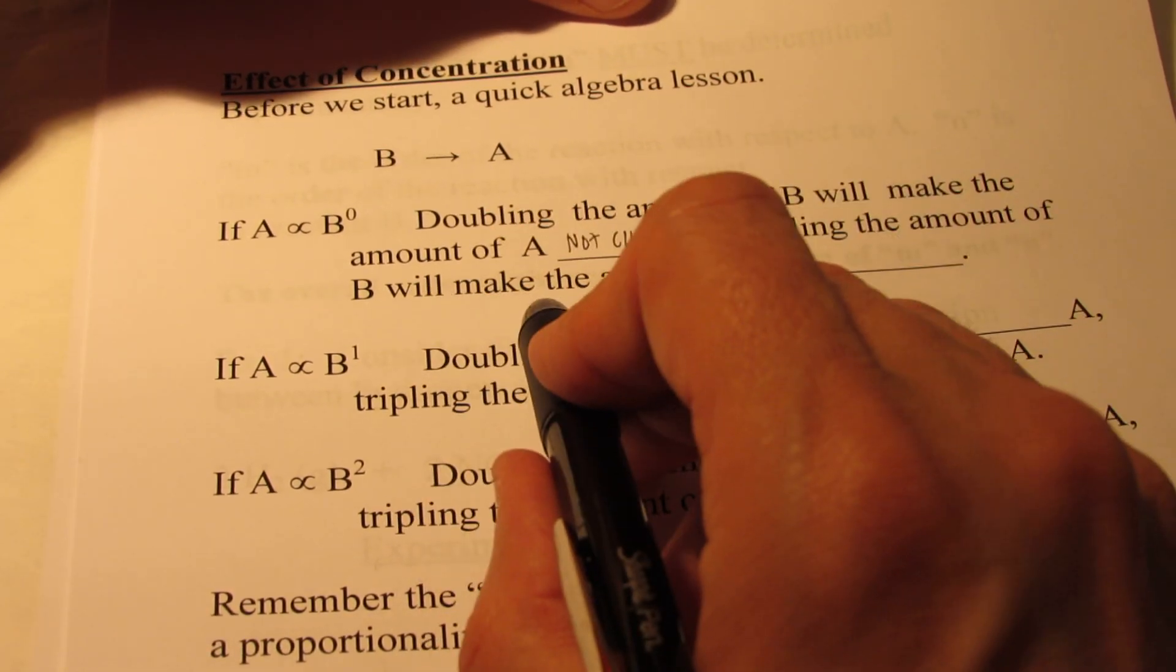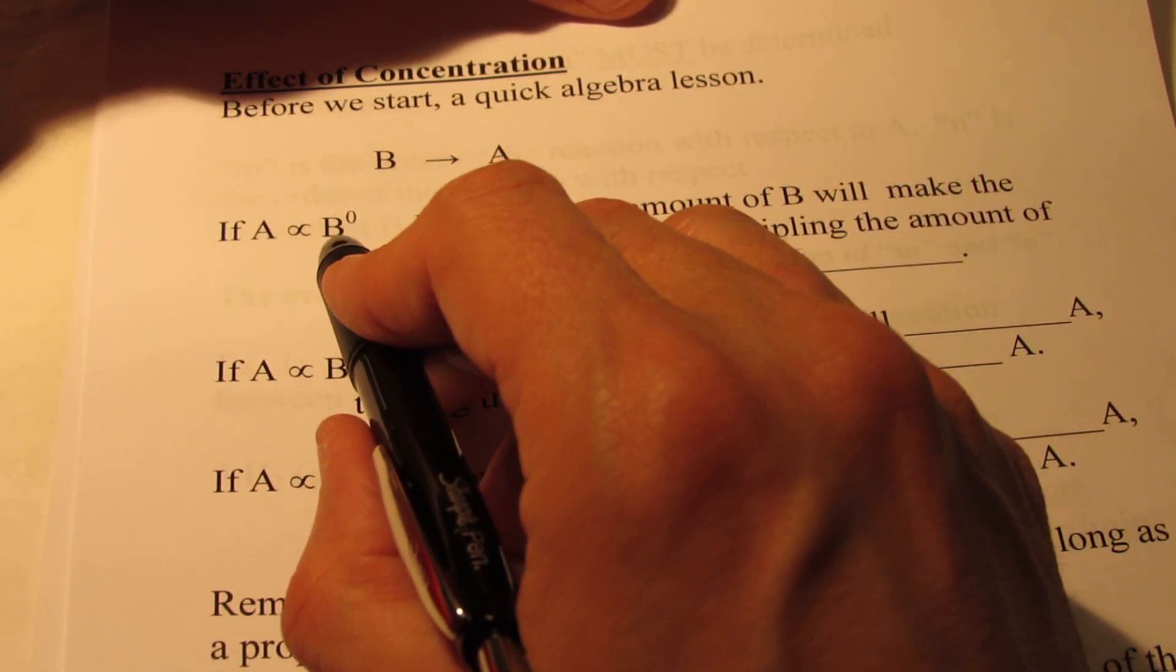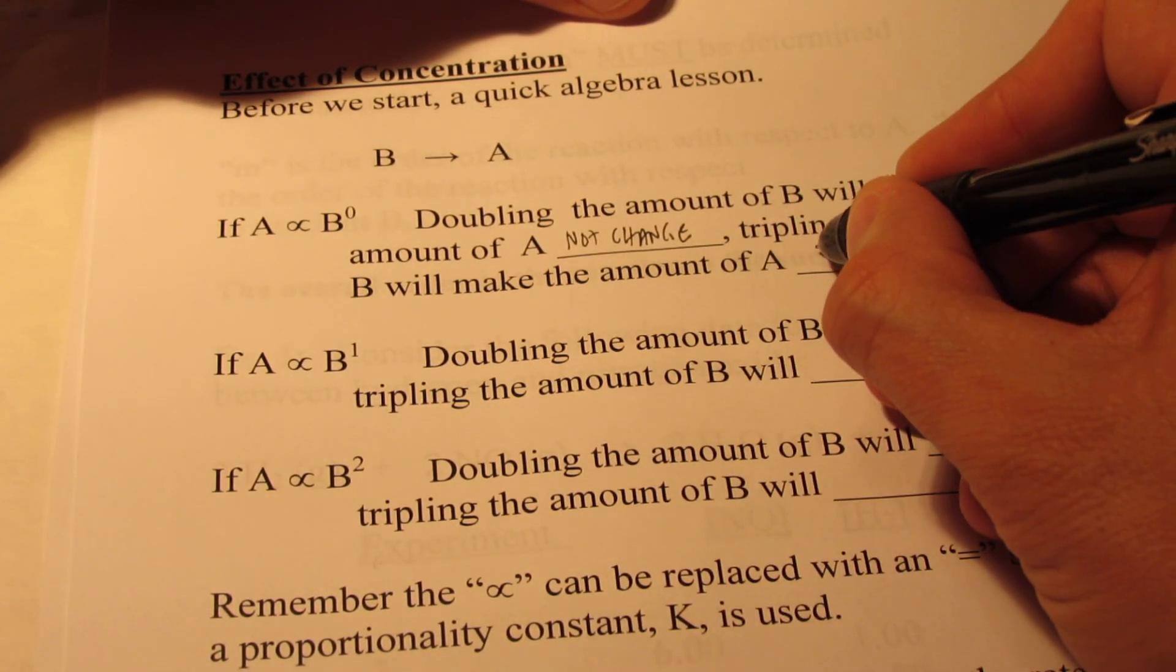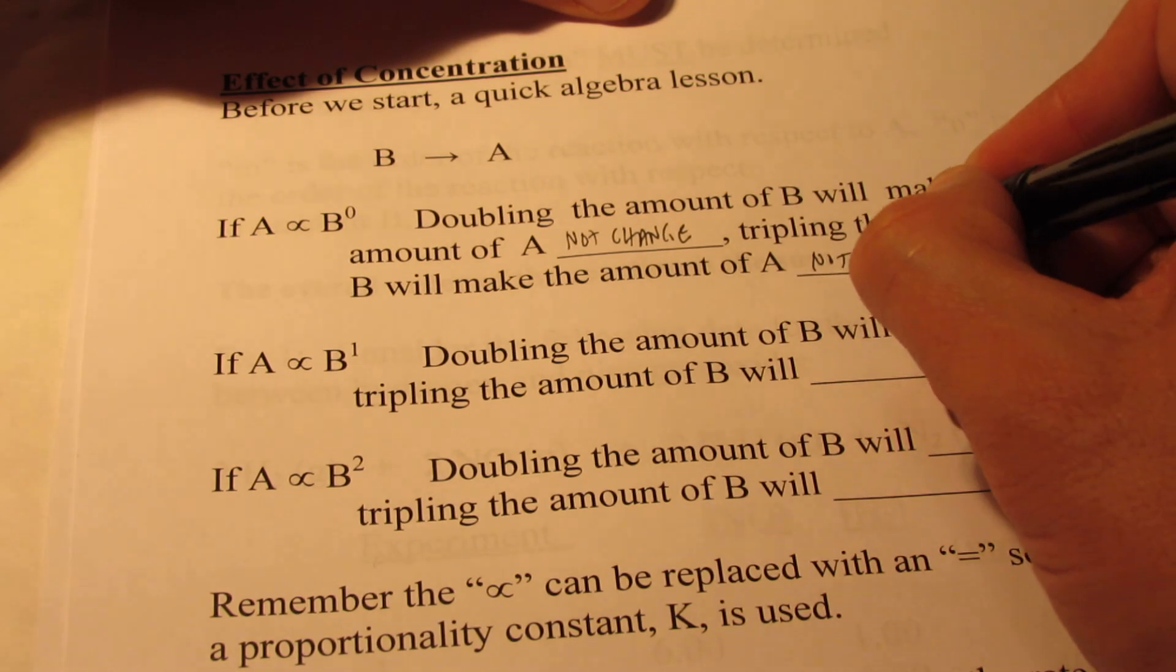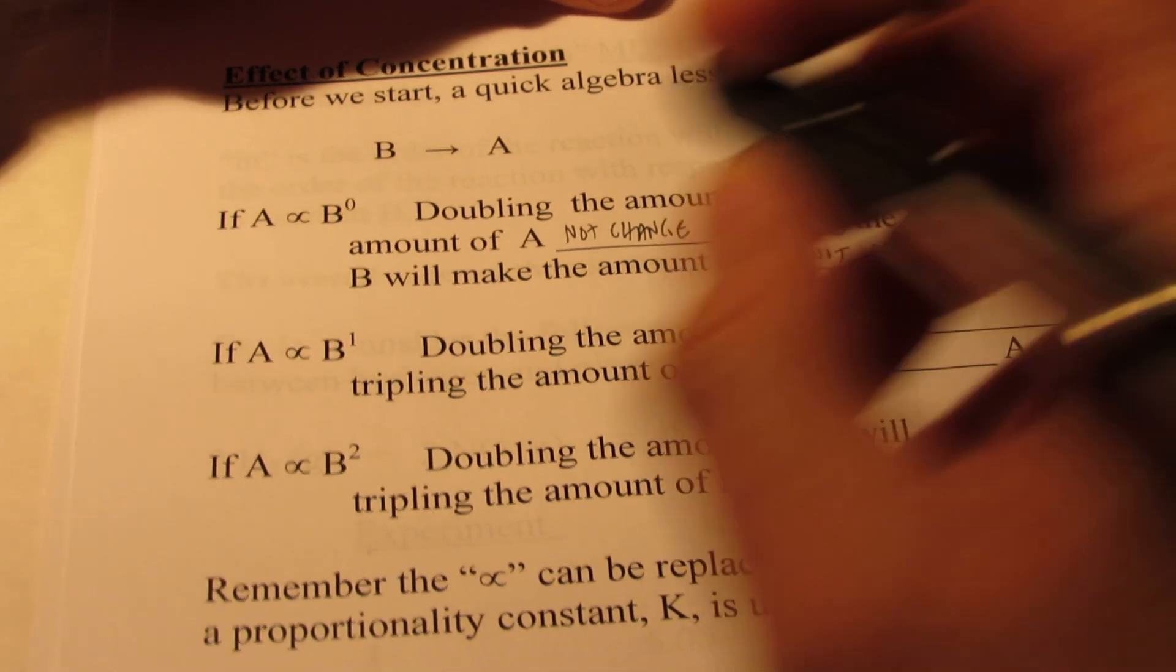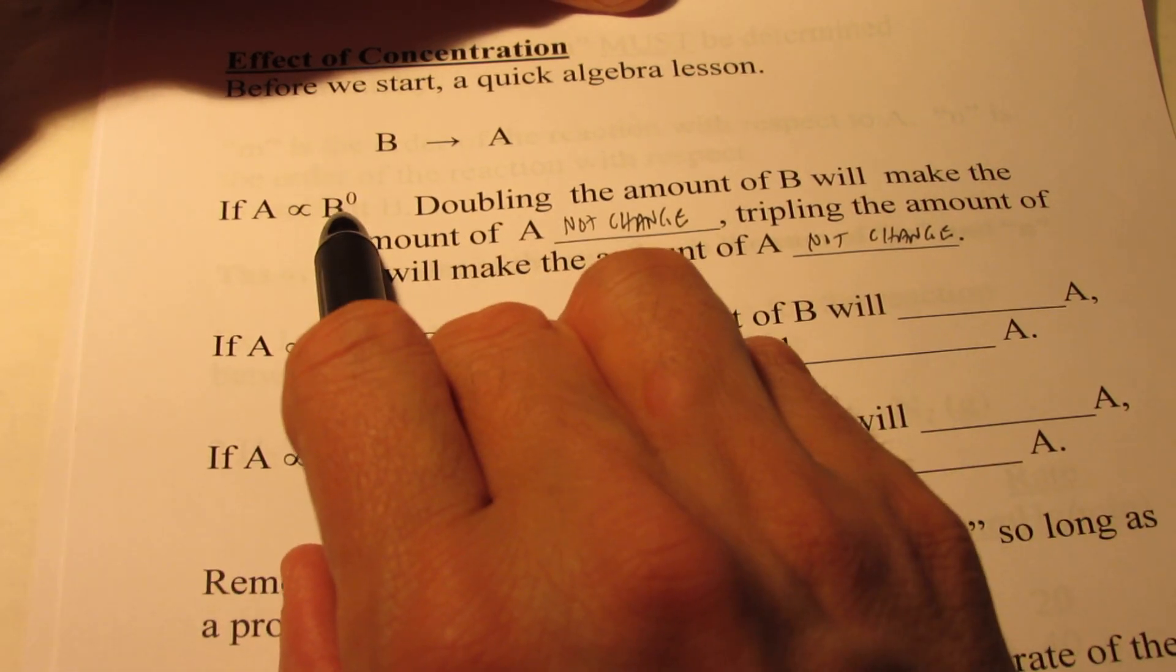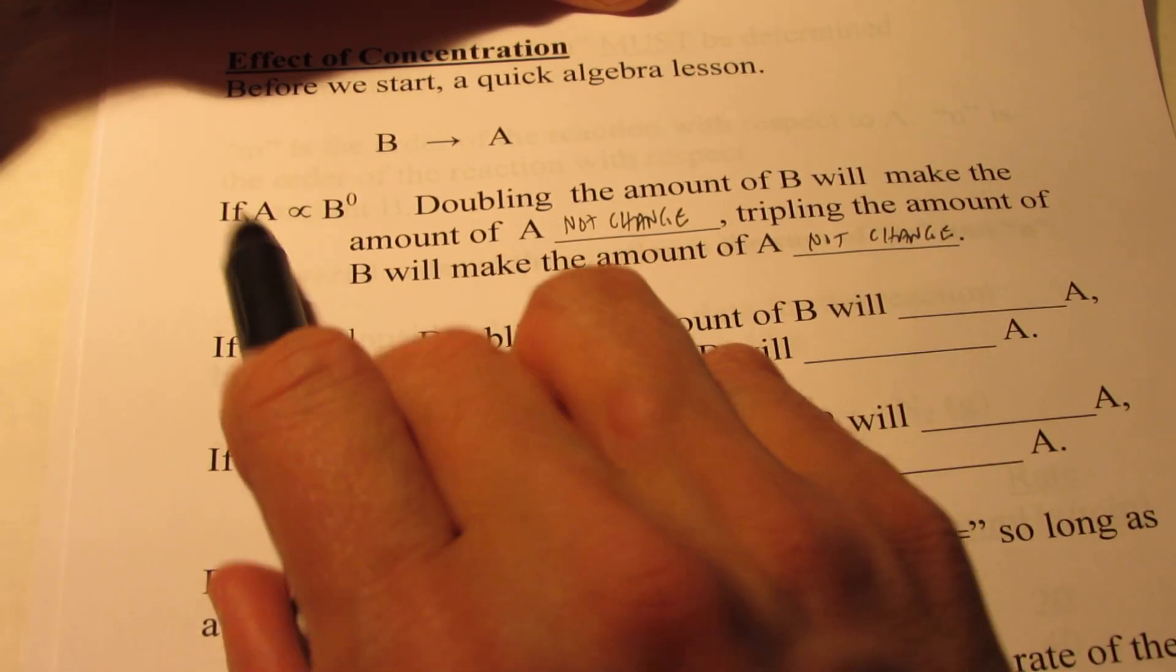How about tripling the amount of B? 1 to the zero power, 2 to the zero power, 3 to the zero power will make the amount of A not change. When I have A as proportional to B to the zero power, no matter what I do to B, it will not have an effect on the value of A.